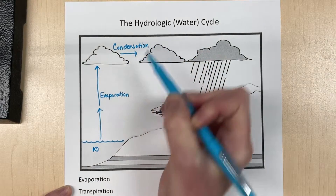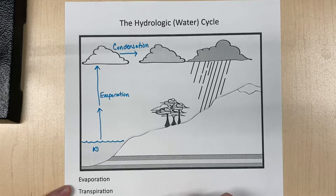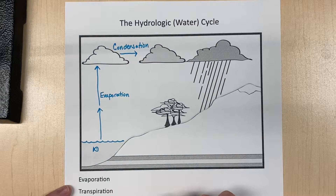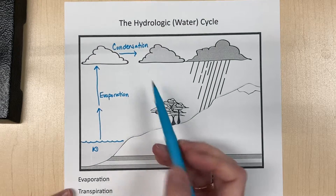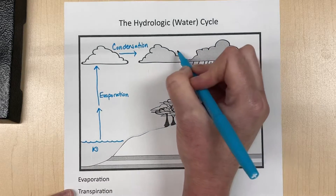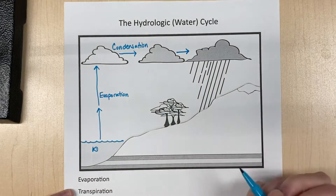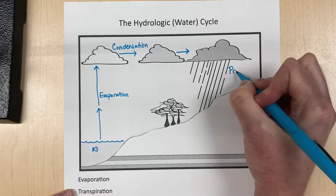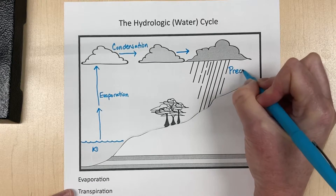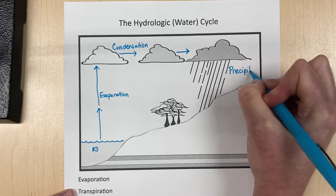Now these clouds can rain back over the ocean, back over a lake, but often they move over land. And they rain. So rain, snow, sleet, hail is called precipitation.